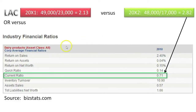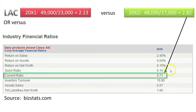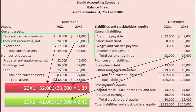In the BizStats table for the dairy products industry, the average Quick Ratio was 0.14 compared to the average Current Ratio of 0.71. Because the dairy industry's Quick and Current Ratios are so different, it appears that a significant amount of the dairy industry's current assets are tied up in inventory.